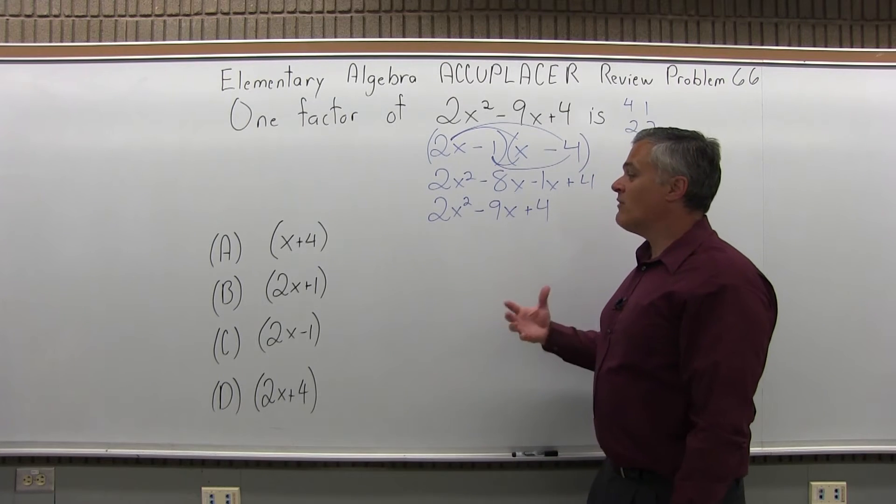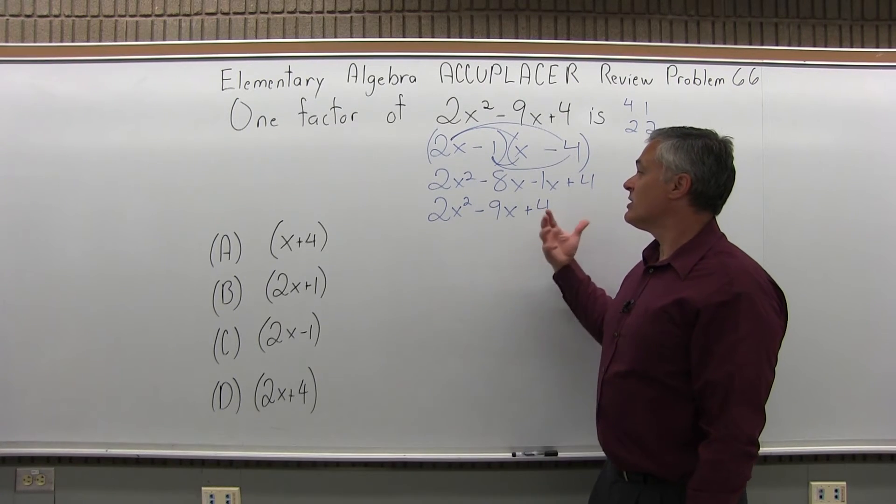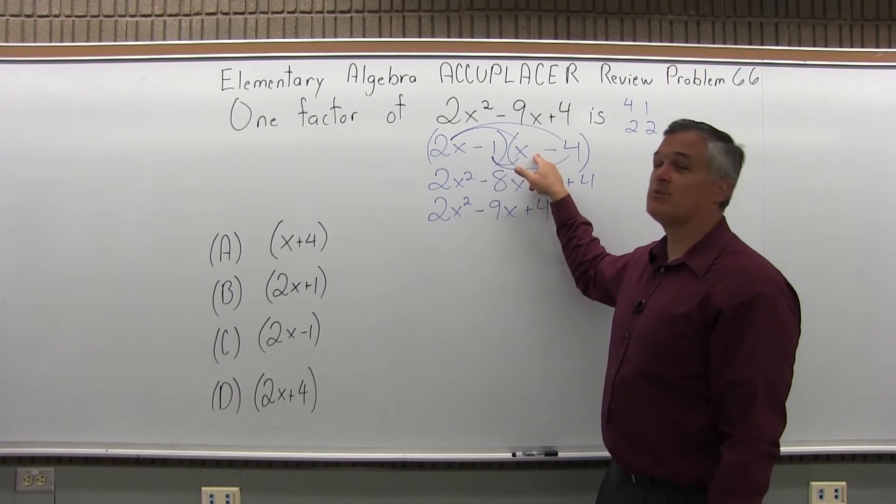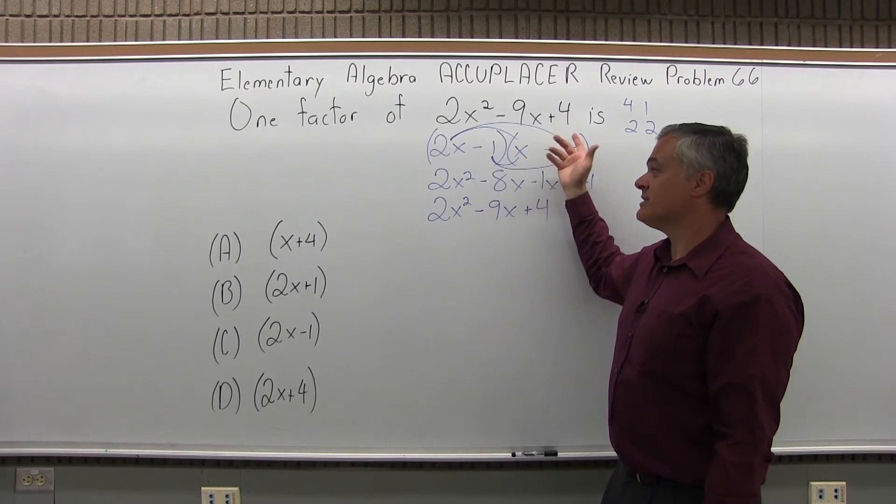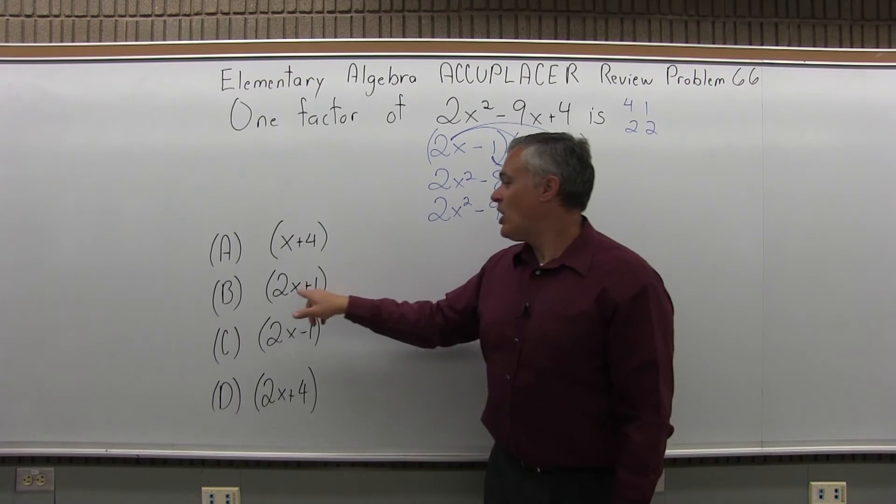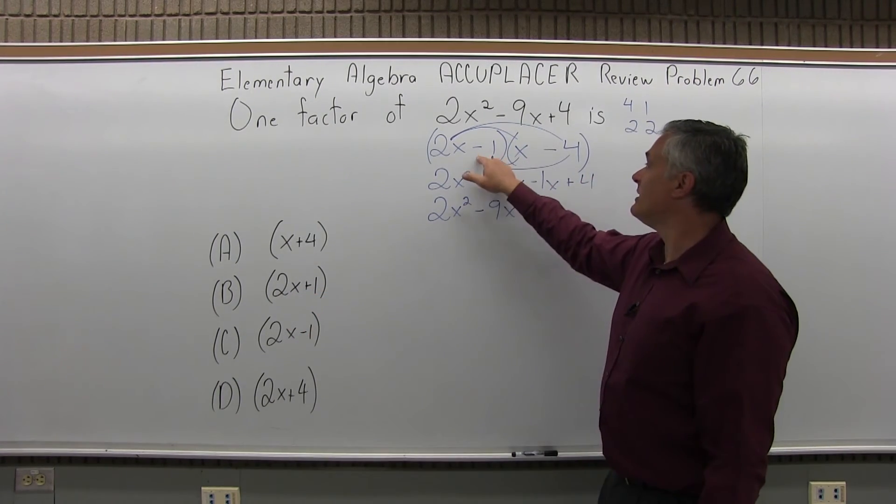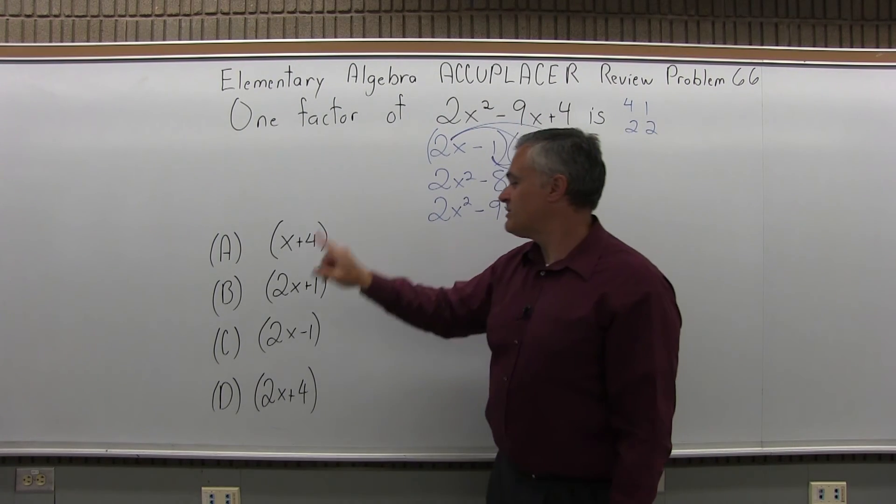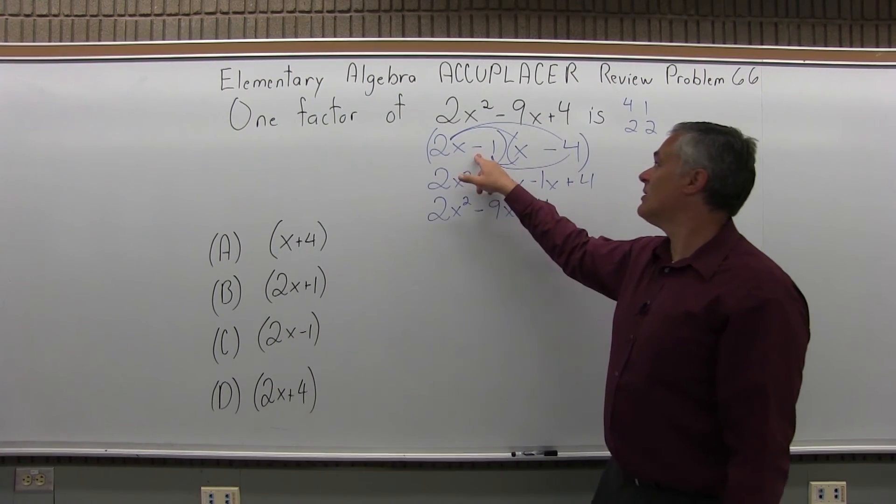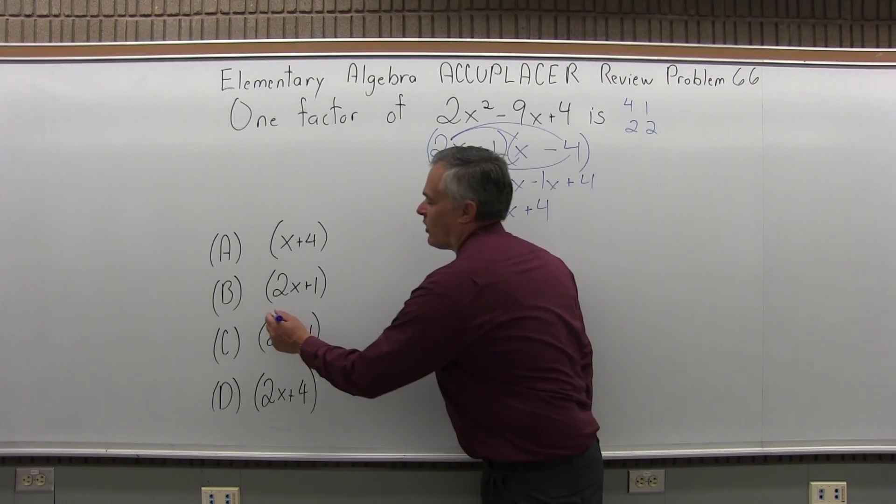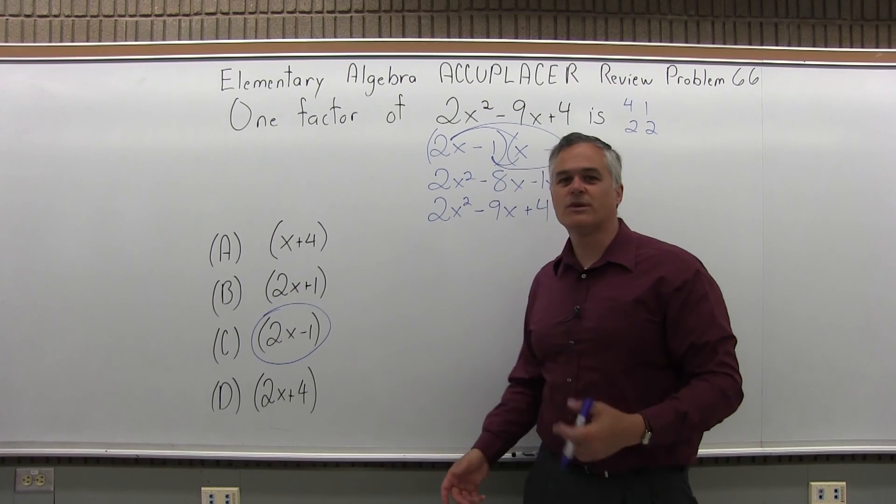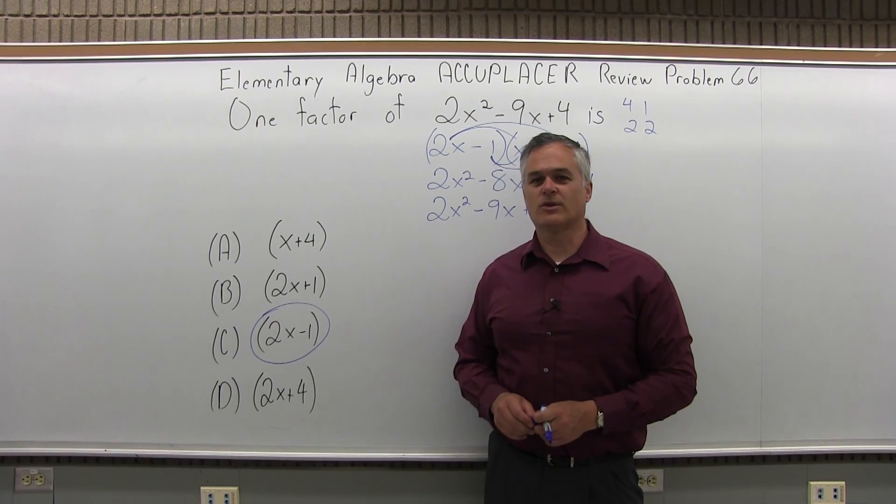Now, of the options listed, which one is one of the parentheses that I used? Option A says x plus 4. X plus 4 is not one of my parentheses, so the answer is not A. Option B, 2x plus 1, does not show up in my factoring. Option C, 2x minus 1. Okay, that is one of my parentheses. So option C is the answer. This is one of the factors or one of the parentheses needed when you factor out the question.